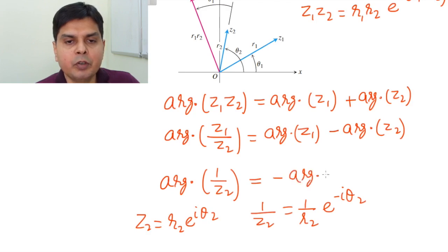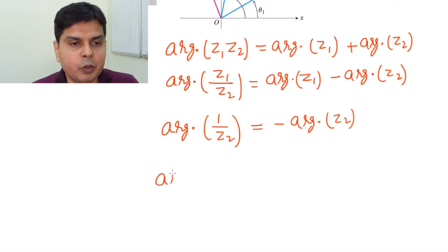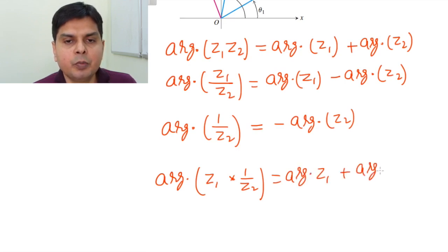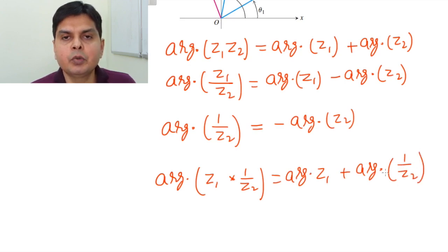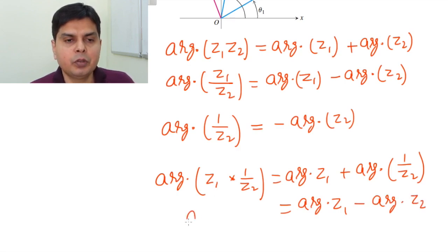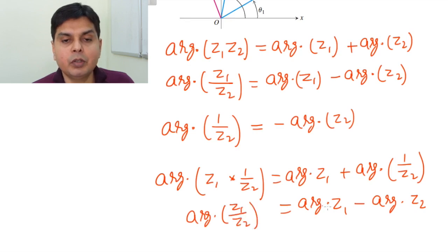Since arg(z1/z2) = arg(z1 · 1/z2) = arg(z1) + arg(1/z2) = arg(z1) − arg(z2), we confirm that arg(z1/z2) = arg(z1) − arg(z2).